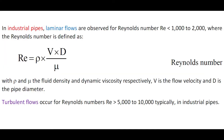In industrial pipes, laminar flow is observed for Reynolds numbers less than 1,000 to 2,000. Turbulent flow occurs with a Reynolds number greater than 5,000 to 10,000.